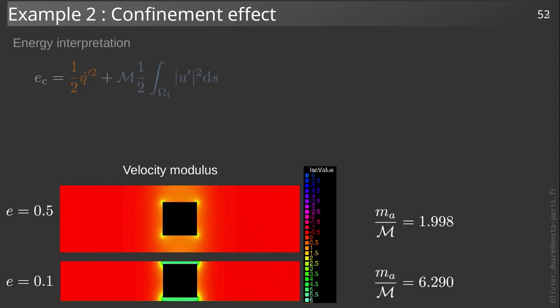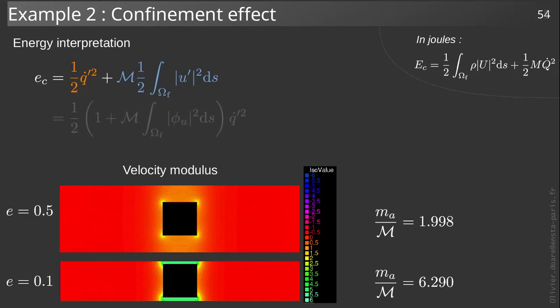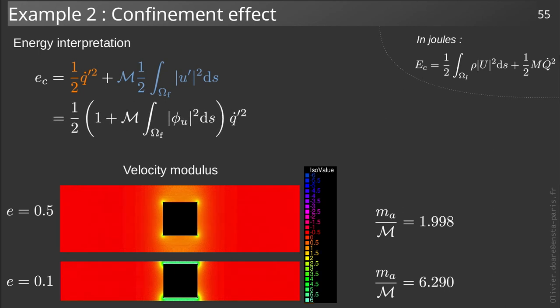This observation gives us the idea of interpreting the added mass differently from energy considerations. The total kinetic energy of the system is the sum of the kinetic energy of the solid and the kinetic energy of the fluid. Note that this is a dimensionless version of the kinetic energy, which is expressed on the right using the correct physical units. Note also that the problem is two-dimensional, that the integral is a contour integral, and that it is therefore energy per unit length in the third direction. Using the fact that u' equals q' dot times phi_u, we can put this kinetic energy in a form depending only on the velocity of the solid q' dot.